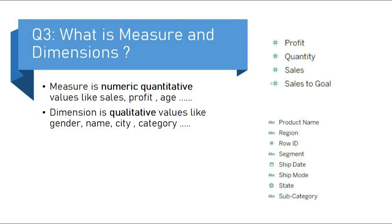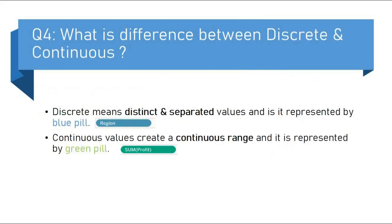As you can see, the hash symbol (#) represents an integer value, 'abc' represents a string value, this symbol represents a date and time value, and this represents a geographic value.